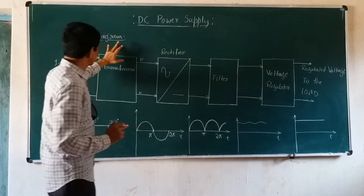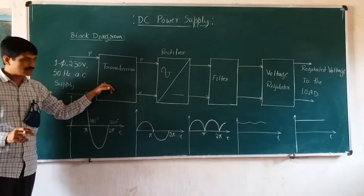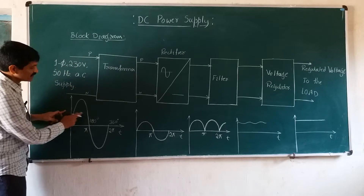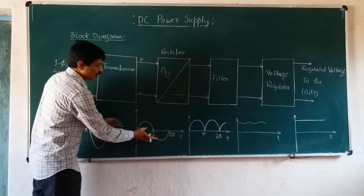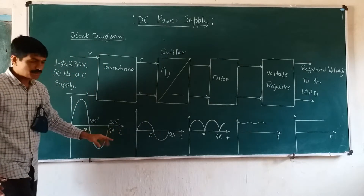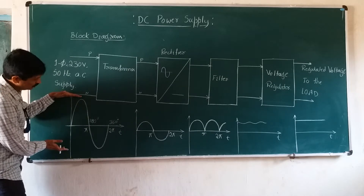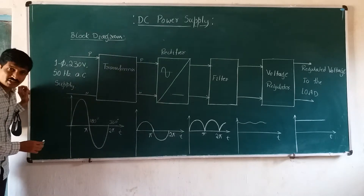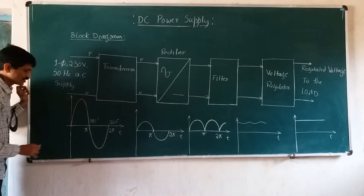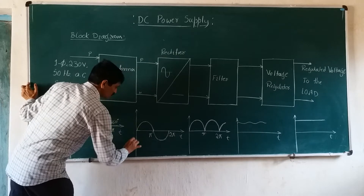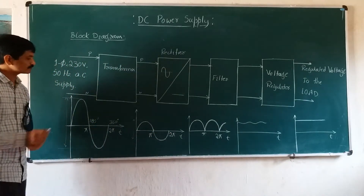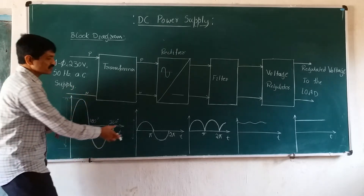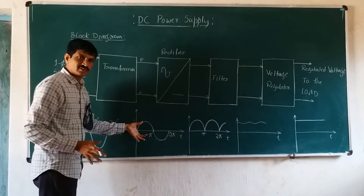In the block diagram, the first block is the transformer. The main function of this transformer is to reduce the single-phase 230V 50Hz voltage magnitude to the required lower level. There will be no change in the frequency, but the magnitude is reduced. As you can see in the presentation, the peak-to-peak value of the voltage is reduced, but the frequency is maintained the same. The function of this input stage transformer block is to reduce the AC voltage level to the required level.